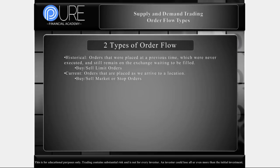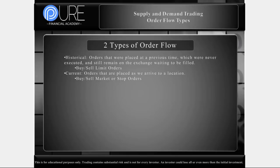Having historical orders still sitting there is in addition to all willing participants ready to buy as we arrive again. So we take support and resistance, supply and demand levels, all these confluence measures, and really want alignment — an uptrend with a demand level, a pullback to the demand level. Because it's a demand level, we would almost certainly have historical orders there, plus new participants willing to buy again because they can see it clearly on the price chart. Location is far more superior to the pattern itself.